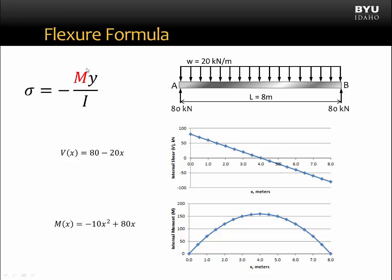Let's first focus on the variable m. M is the internal moment in the beam. Here is a moment diagram for this beam. We see that the internal moment changes along the length of the beam. We found the moment diagram either using the direct equation method or the graphical method. Depending on where we want to calculate stress in the beam, we will pick a moment off of the moment diagram. Typically, we are interested in the maximum moment because we are interested in finding the maximum stress in the beam, since the maximum stress will control the beam design. The maximum moment can easily be found on the bending moment diagram.